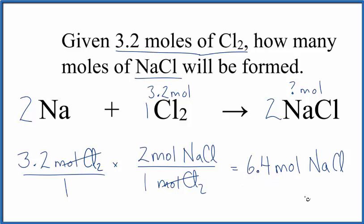If you needed to know the number of grams of NaCl, you could just multiply 6.4 moles times the molar mass for NaCl. That would give you grams.